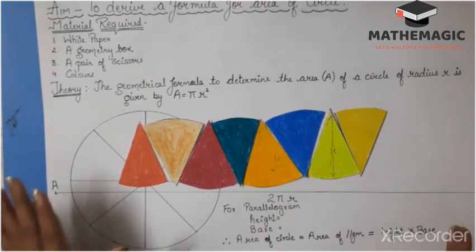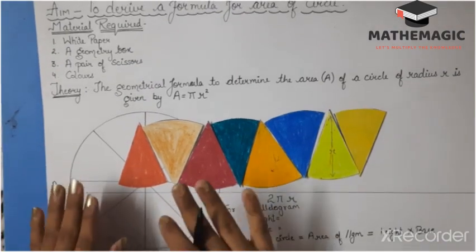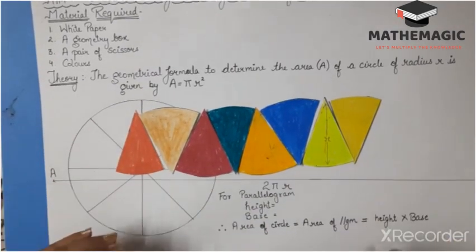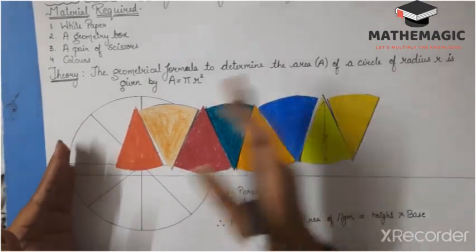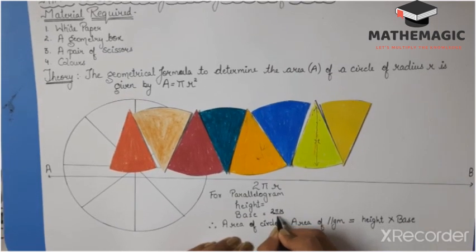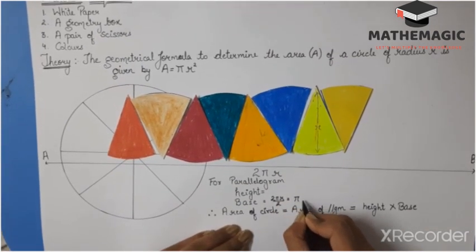Observation: We observe that the approximate base length of the parallelogram is equal to half of the circumference of the circle. That is 2πr divided by 2, which equals πr.